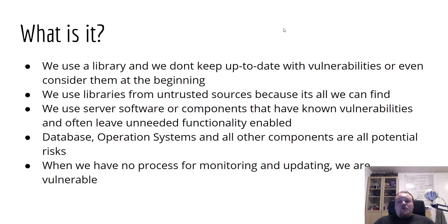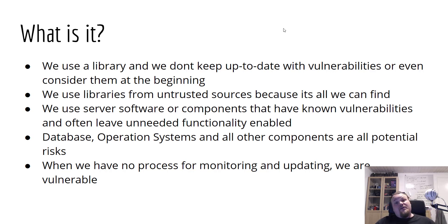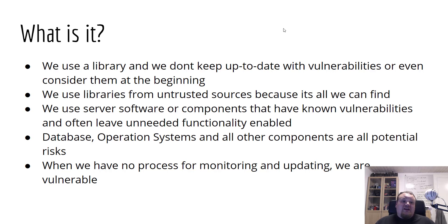We use server software or components that have known vulnerabilities and often leave unneeded functionality enabled. Whenever you install a service, use some software, or create a project with some libraries, the libraries are most likely configured neutrally — not configured for your context, not for your server or your application. They're probably configured for a broad spectrum of different kinds of applications, so whenever you roll it out, it just works. That is called user feature or convenience. However, in most occasions it does leave you some vulnerabilities.